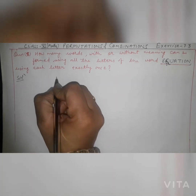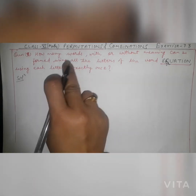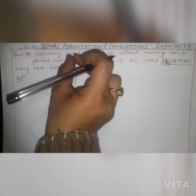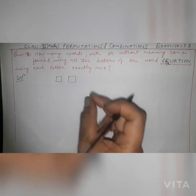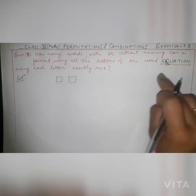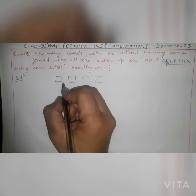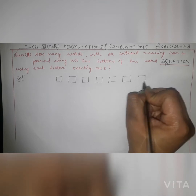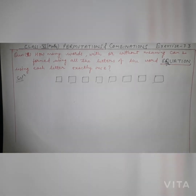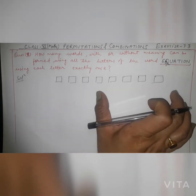We need to make 8 boxes here because the question does not specify 4-letter or 5-letter words — we have to use all 8 letters. So we draw 8 boxes: 1, 2, 3, 4, 5, 6, 7, and 8. There are two methods: one is the box method, which is the starting method, and then there is the permutation formula, which is easier.